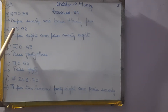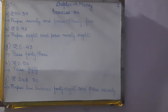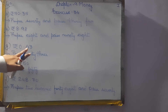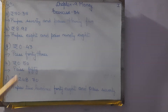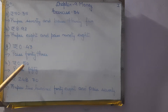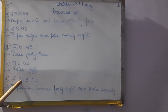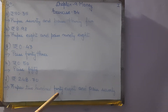Next: rupees 8.98, so rupee 8 and paise 98. Next: rupee 0.43 — nothing is there in place of rupee, only paise is there, so we write paise 43. Rupees 0.50 — only paise is given, so paise 50. Rupees 248.70: rupees 248 and paise 70.